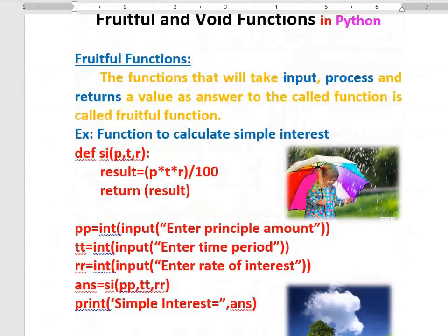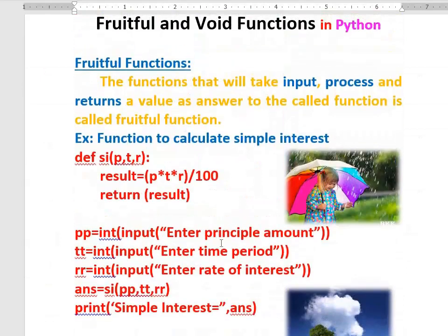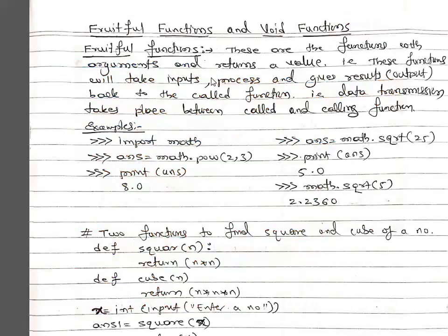In my notes I have already explained fruitful and void functions. Fruitful functions are the functions with arguments that return a value. These functions take input, process it, and give the result back to the calling function. That means data transmission occurs between the called function and the calling function.